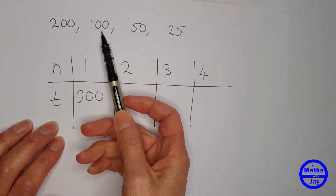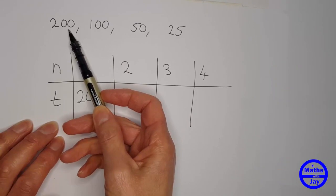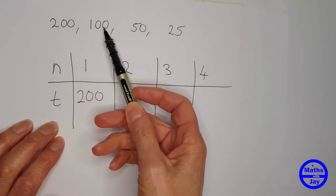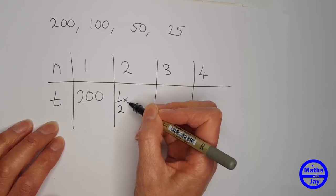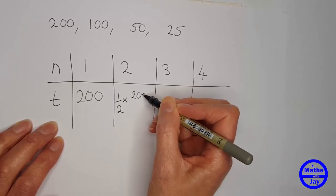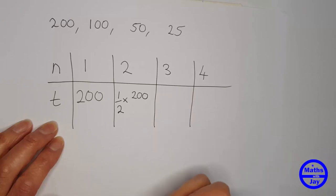So I can see that 100 is a half of 200 and 50 is a half of 100 which is a half of 200 and so on. So therefore I'm going to write down the second number in the pattern as a half of 200 or a half times 200.